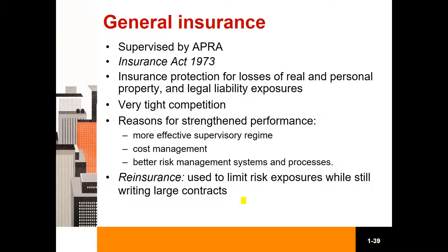Through reinsurance, general insurers are able to transfer all or part of their risk to a new contract with another insurance company. Direct insurers are the insurers that sell insurance policies directly to customers. Reinsurers, on the other hand, are the ones that purchase insurance policies from others. In this way, direct insurers can spread their risk to other insurers — effectively the reinsurers.